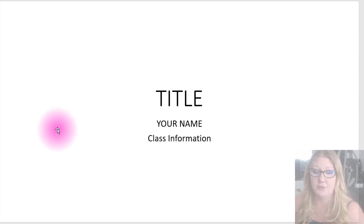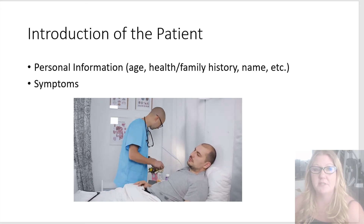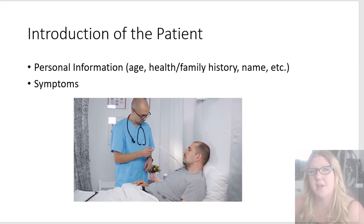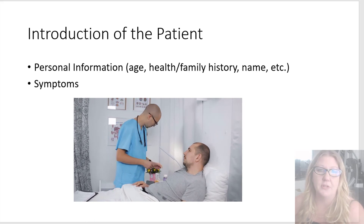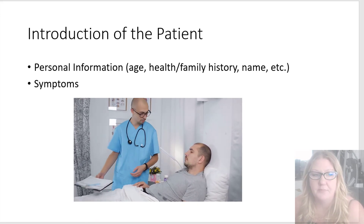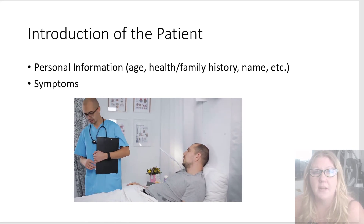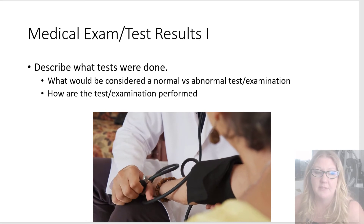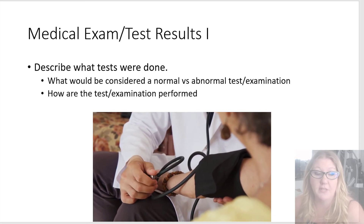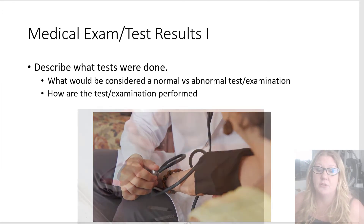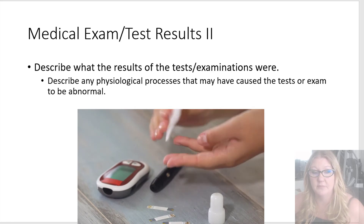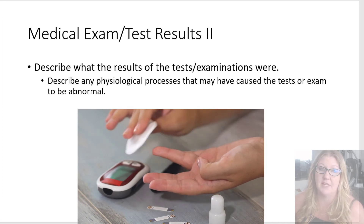On your first slide put the title, your name, and class information. Then introduce the patient — and again, if you don't have a specific patient and are doing the broader approach, talk about the demographics: does the disease affect a certain age range, geographical location, lifestyle, genetic makeup, or ethnicity. Also include the symptoms. You might need more than one slide for personal information or demographics and symptoms, which is totally fine. For medical exam and test results, describe what tests need to be done or were done, what constitutes a normal versus abnormal result, how the tests are performed, then give the results of the tests and describe any physiological processes that may have caused an abnormal result.